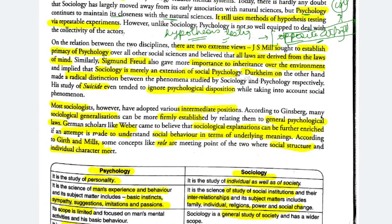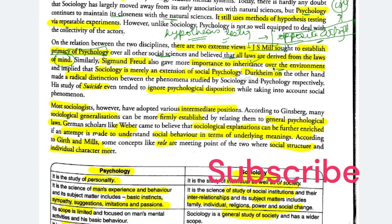Looking at the relation between the two disciplines — J.S. Mills said that psychology has primacy over all other social sciences, and all laws are derived from the laws of mind. When the world is running, the brain is playing a role. J.S. Mills said inheritance is more important over environment, meaning individual genetic traits are more important in comparison to your surroundings and environment.